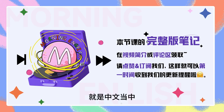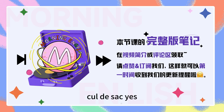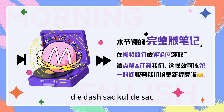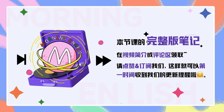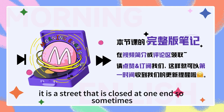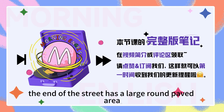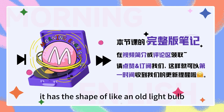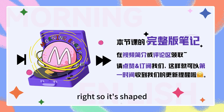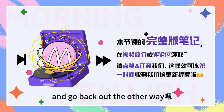还有一个就是中文当中会经常说的一条死胡同，对吧？So that's called a cul-de-sac. Cul-de-sac. How to spell it? C-U-L-D-E-S-A-C. That's so not English, right? Right, it's very strange. It is also from French. It is a street that is closed at one end. And it's usually a semi-circle — sometimes the end of the street has a large round paved area. From above it has the shape of an old light bulb. 像一个灯泡一样的这样的一条路，就叫做cul-de-sac. So it's shaped like an old light bulb if you're looking at it from the sky, making it easier for vehicles to turn around and go back out the other way.